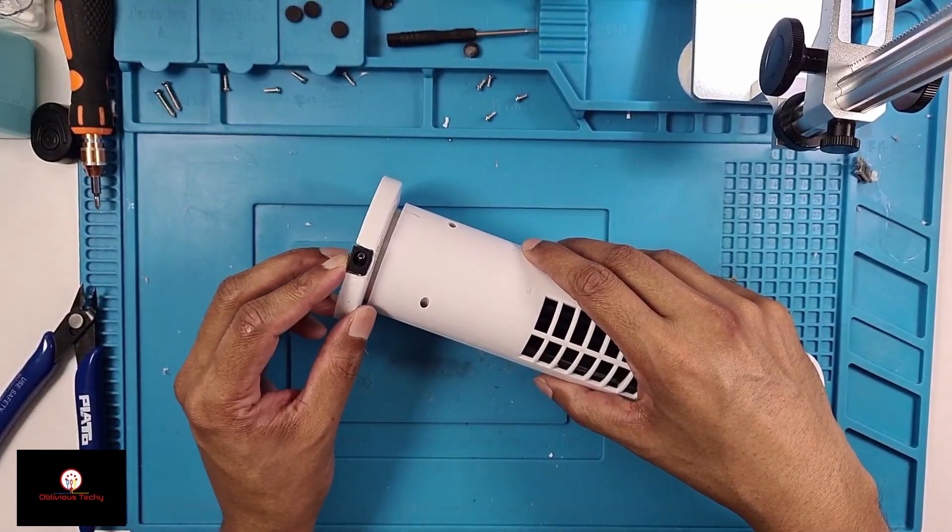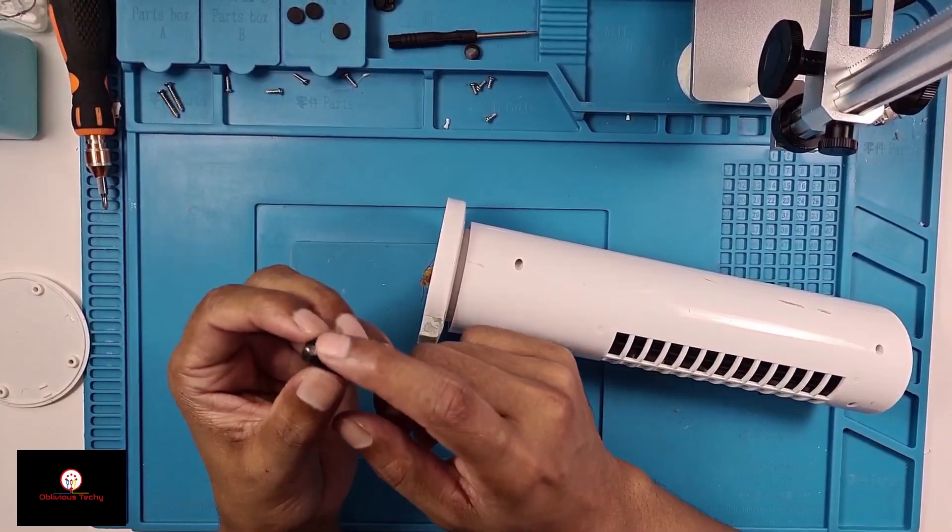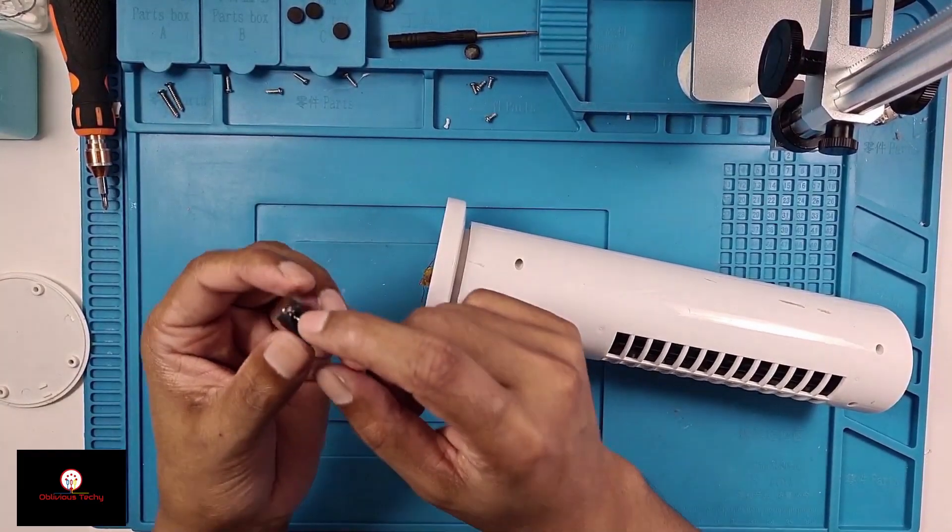Okay, so that's done. Now I'm going to solder these wires here. This outside pin is the plus and the middle one is the minus.